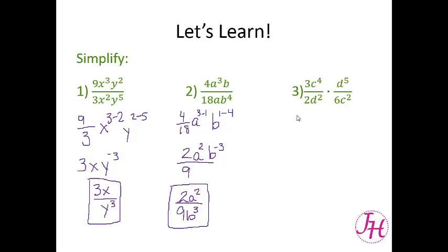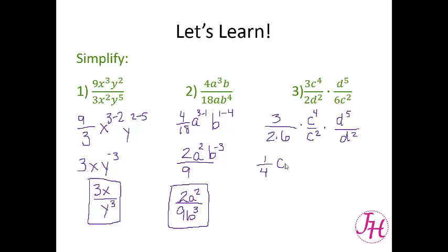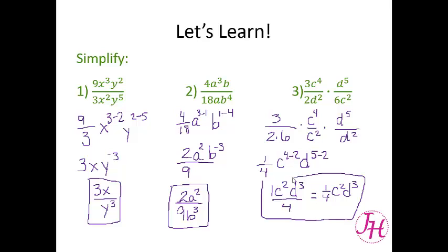Now let's try number 3. We have 3 over 2 times 6, times c to the fourth over c squared, times d to the fifth over d squared. This fraction reduces to give us 1 fourth, because 2 times 6 is 12 and 3 over 12 is 1 fourth. Then we have c to the 4 minus 2, and d to the 5 minus 2. So we have 1 times c squared times d to the third, all over 4. You could also write that as 1 fourth c squared d to the third — either expression is correct.